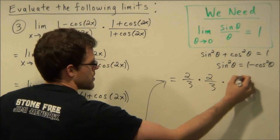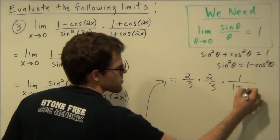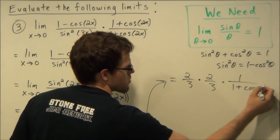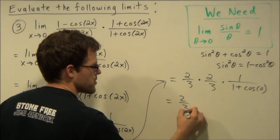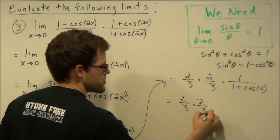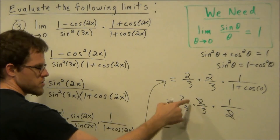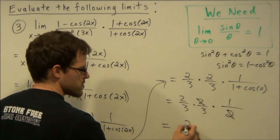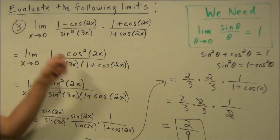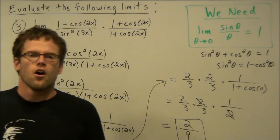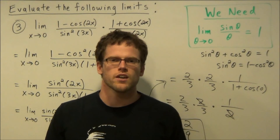The last part we evaluate by plugging in x equals zero: one over one plus cosine of zero. This gives two thirds times two thirds times one over one plus one. That simplifies to four ninths times one half, leaving two in the numerator and nine in the denominator: two times one over three times three. So the limit for question three as x approaches zero equals two ninths. This concludes the video on evaluating trig limits — thank you for watching and I hope this was helpful.